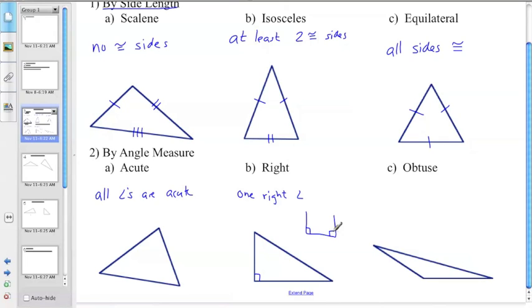And then obtuse has one obtuse angle. And again, if it has more than two obtuse angles, like there's one obtuse angle and there's another, you will never, ever, ever be able to make a triangle out of that. So those are your classifications. You have three based on the side lengths: scalene, isosceles, equilateral, and then you have three based on angle measures, namely acute, right, and obtuse.